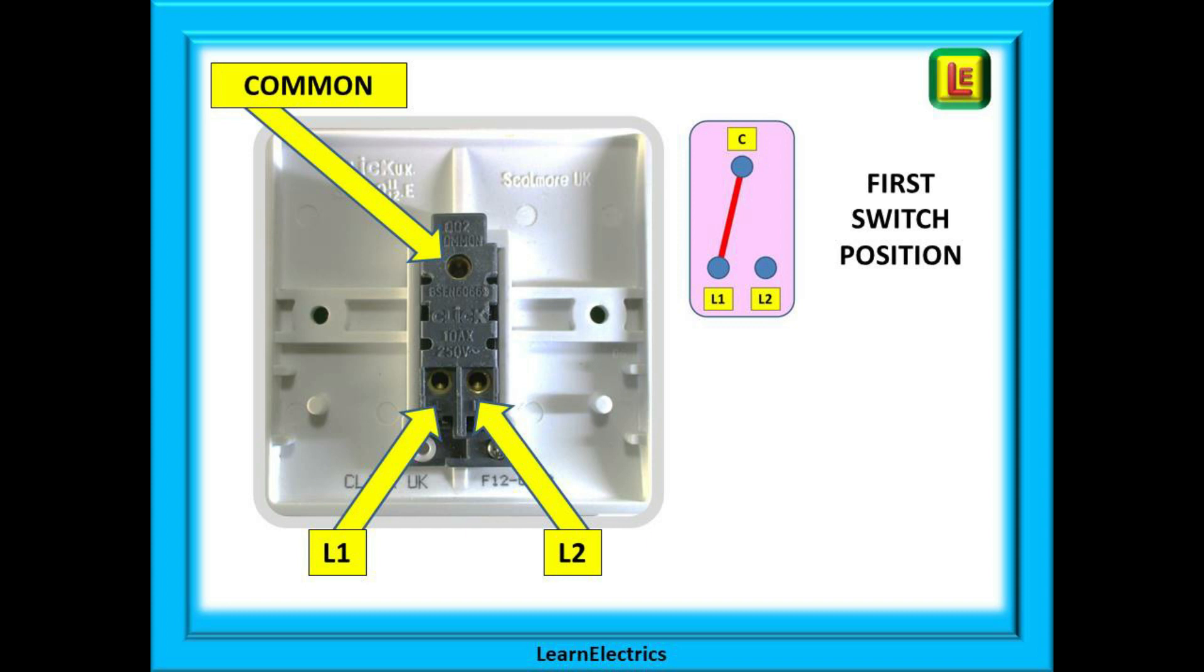You can see that the little sketch relates to our actual switch for the positions of the terminals. In this position electricity can flow between the common terminal and terminal L1. There is a physical metallic connection between them inside the switch.